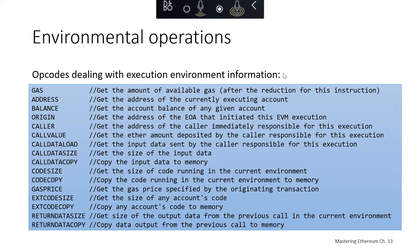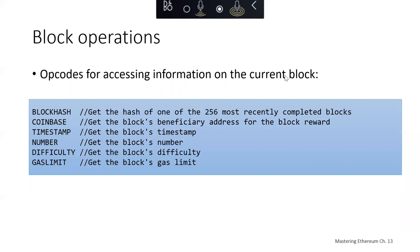From a block operations perspective, we've got operation codes for accessing information on the current block. We get the hash of a recent block, the block's beneficiary address for the block reward—the miner who's getting paid for that block—the block's timestamp, the block's number, the block's difficulty, and the block's gas limit.